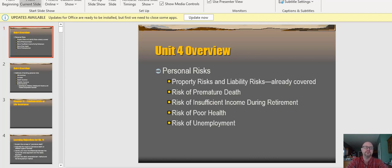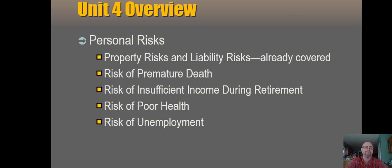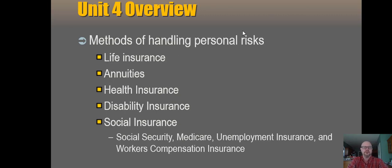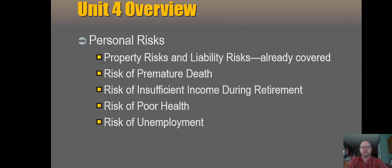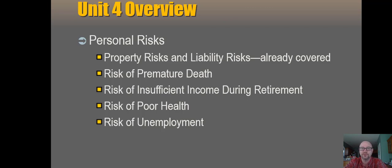I just wanted to point out that this fourth unit — let me make this a little bit bigger so everybody can see what we're talking about. What we're doing now with the fourth unit is talking about personal risks. We already dealt with personal property risk and personal liability risk. Your biggest liability risk is from your auto, and that was in the immediately preceding unit. You might have some liability risk from being a property owner and from your actions on other properties — we talked about homeowners and renters insurance. Your property risks, we talked about how to cover those in homeowners and renters, and then also in auto when talking about physical damage.